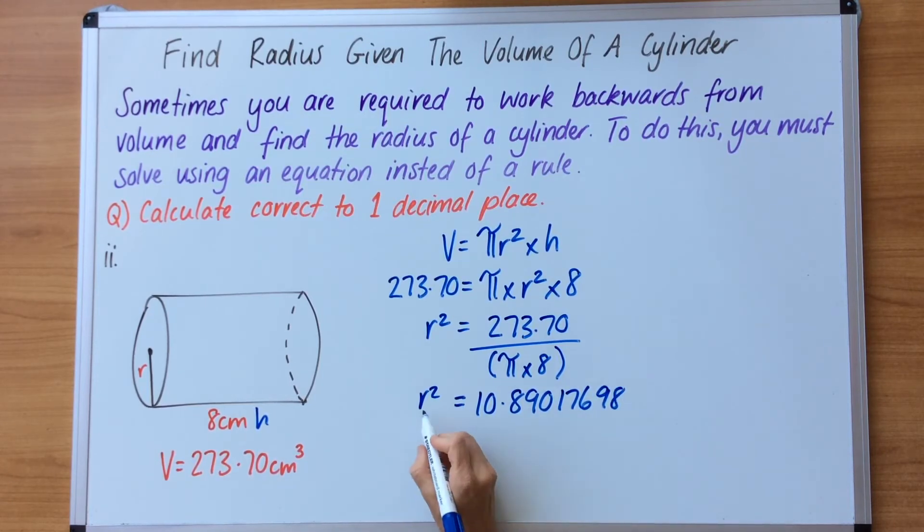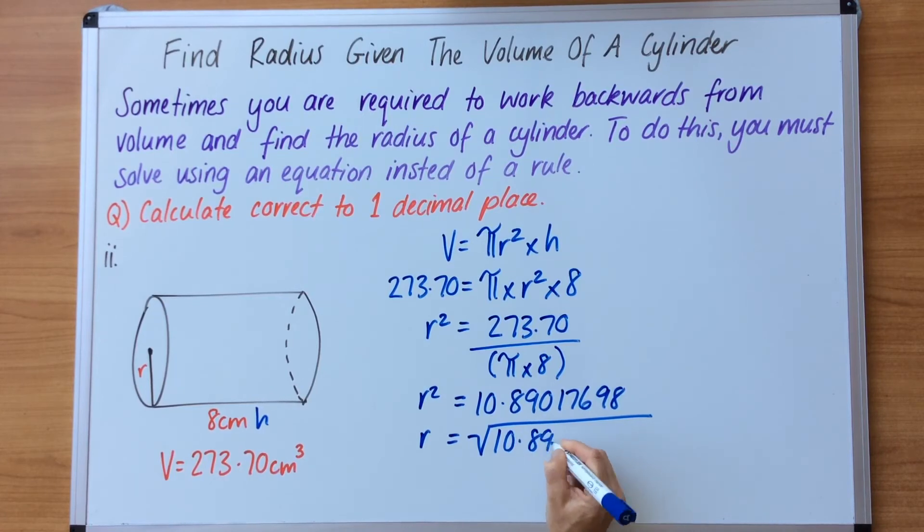We haven't finished there because it says r squared. So in order for us to find r we have to find the square root of that number. So we simply copy that number down, and in our calculators we go square root button, put this into your calculator and it equals: radius equals 3.30026815.